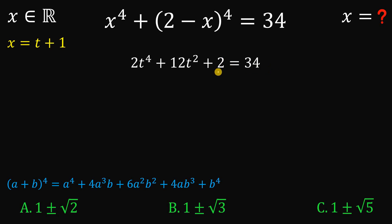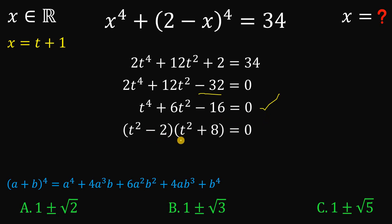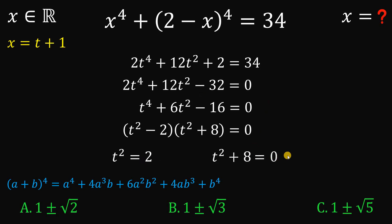Now let's combine like terms and subtract 34 from both sides, giving us negative 32 on the right. Since all coefficients are even, we divide by 2, yielding t to the fourth plus 6t squared minus 16 equals 0. This factors nicely as (t squared minus 2)(t squared plus 8) equals 0. Applying the zero product property, either t squared minus 2 equals 0 or t squared plus 8 equals 0, giving t squared equals 2 or t squared equals negative 8.